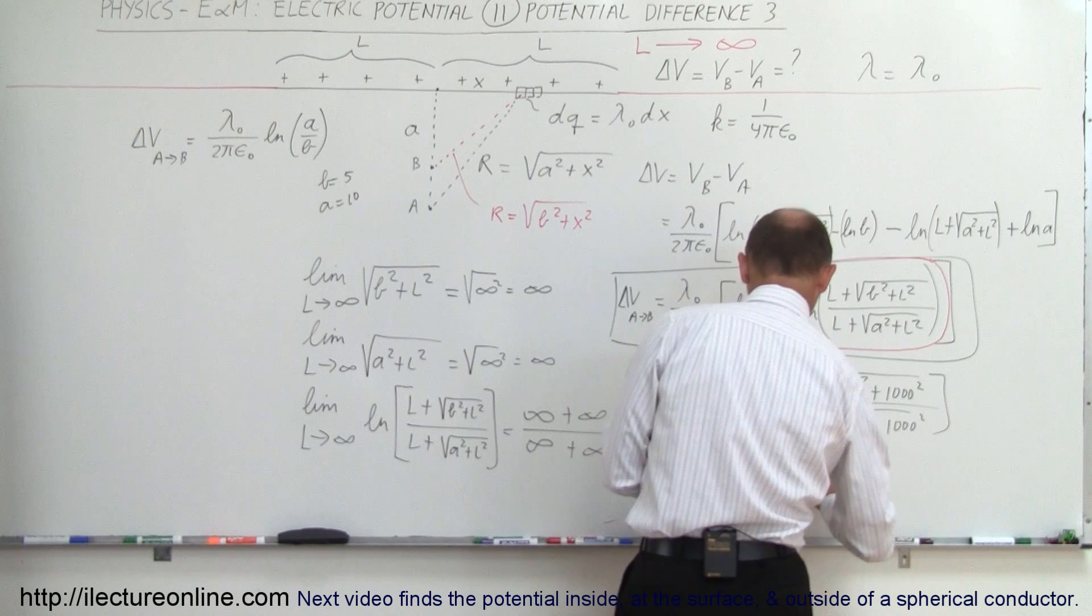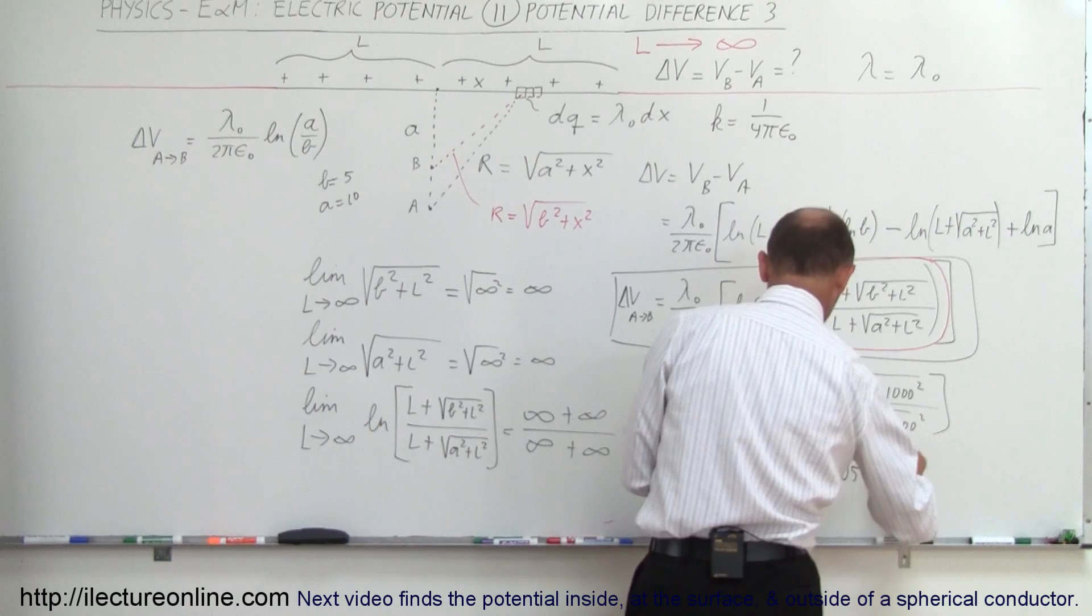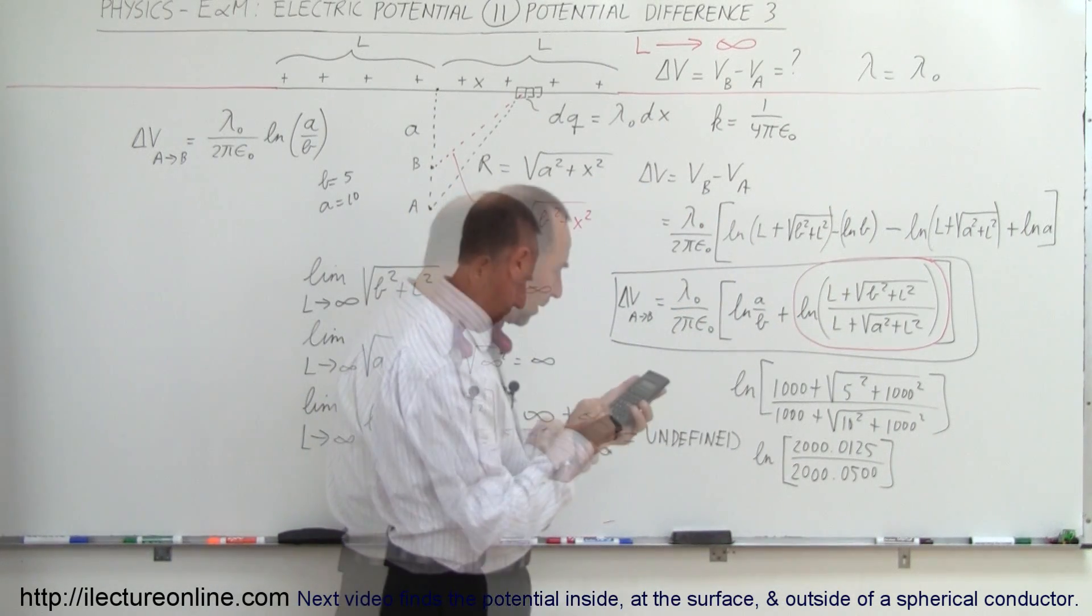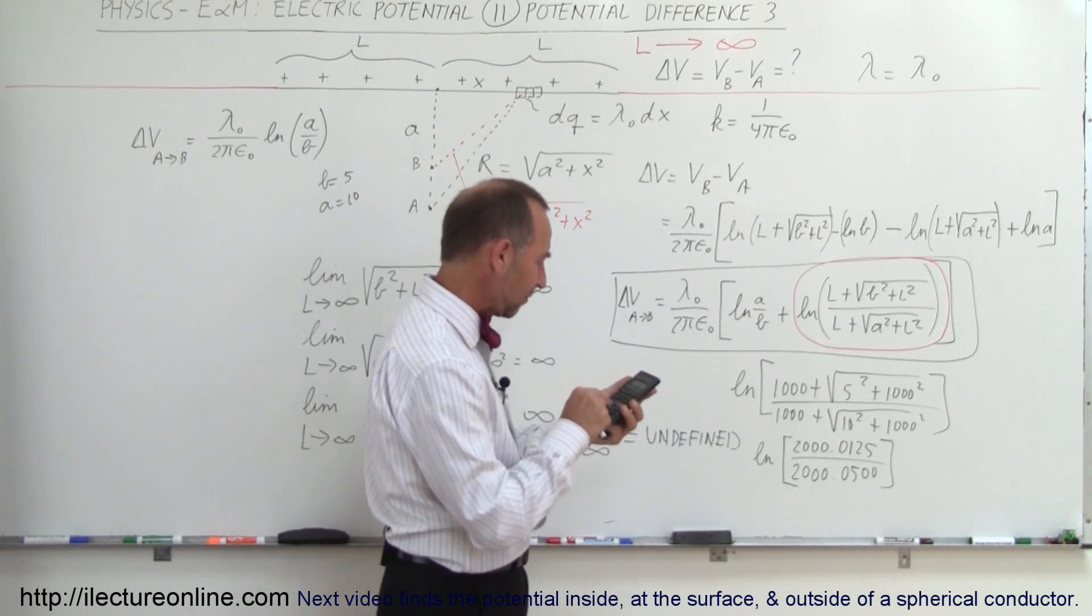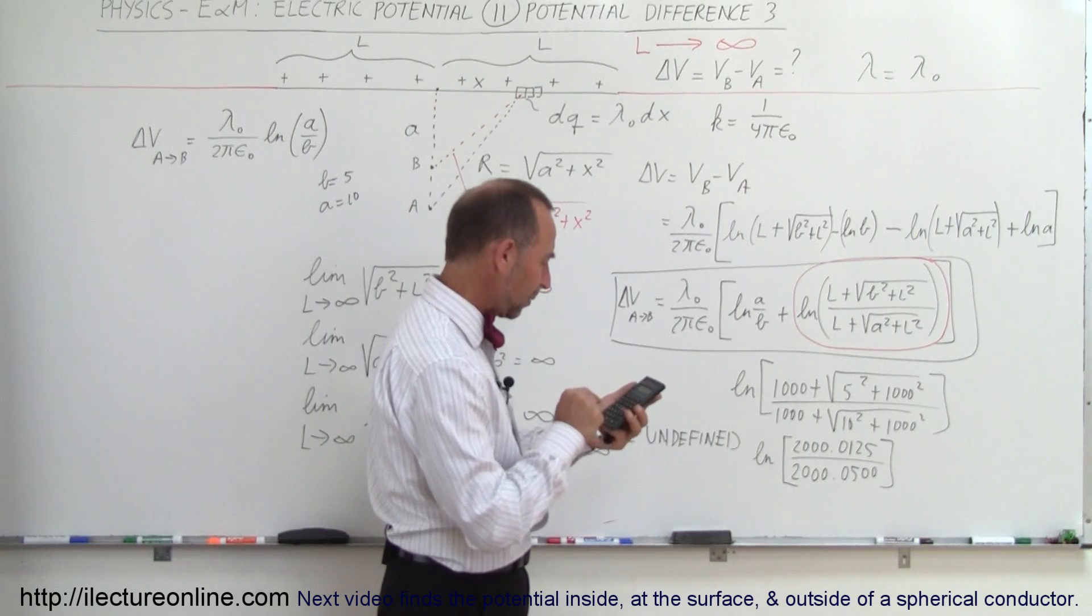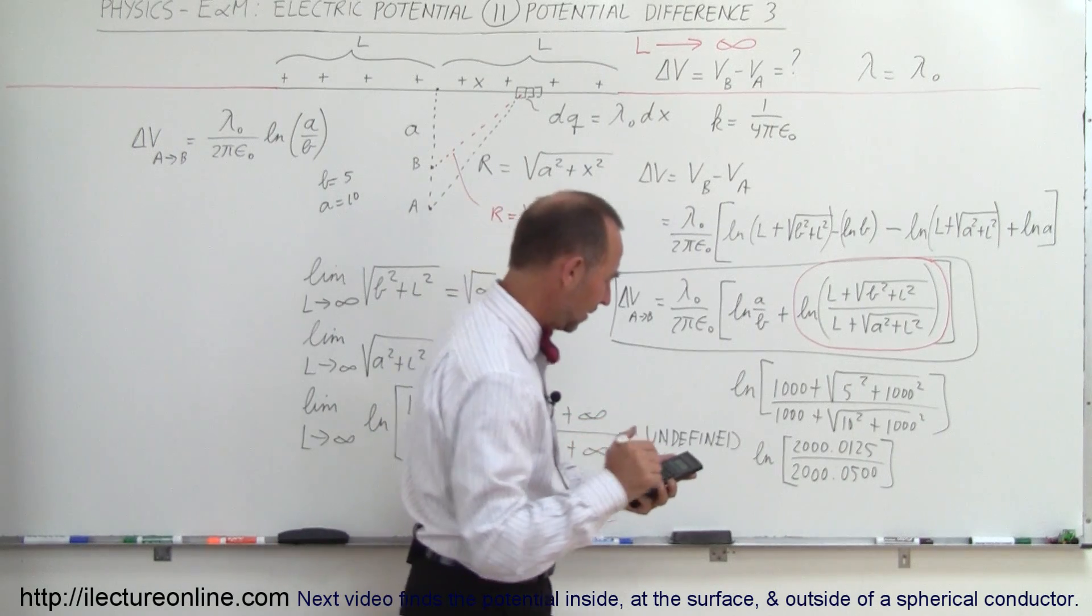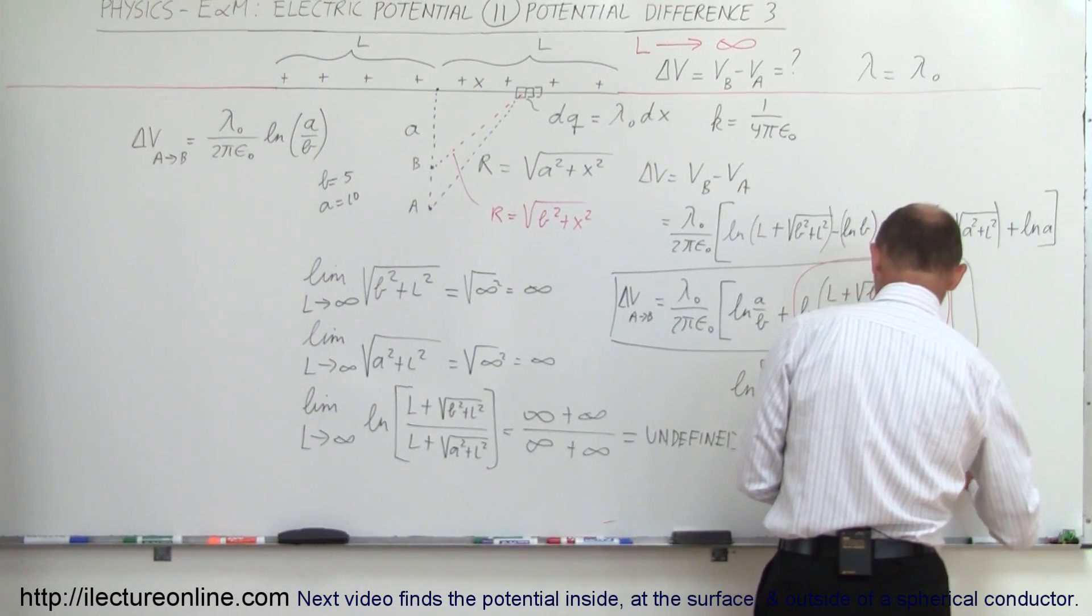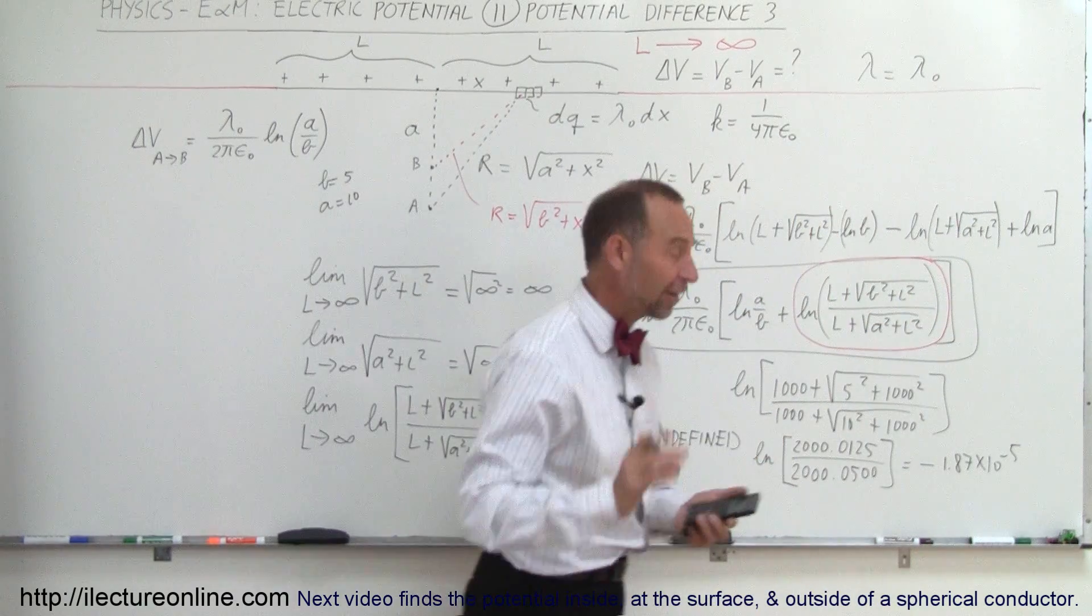Okay, so we have two thousand point zero five zero zero, and let's take the natural log of that. Okay, so two thousand point zero one two five divided by two thousand point zero five equals—that's better—take the natural log of that, and we get this is equal to minus one point eight seven times ten to the minus five. Very tiny number.